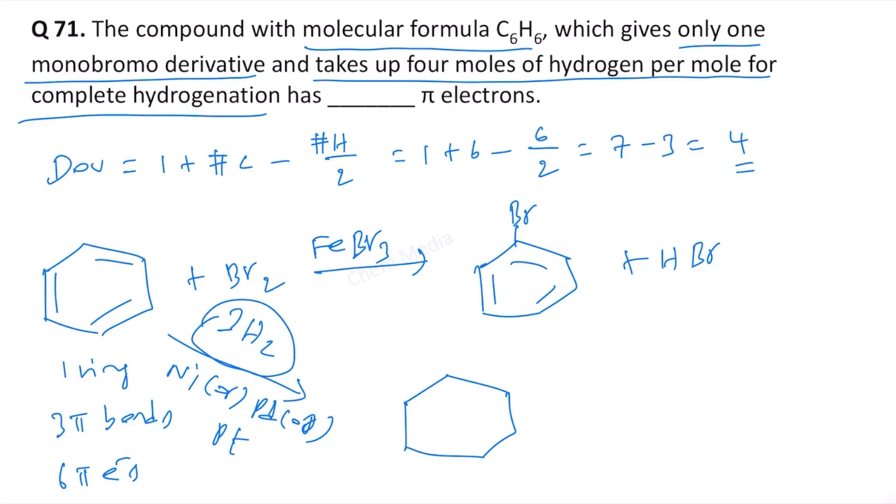But the question says it takes up 4 moles of hydrogen per mole for complete hydrogenation. The stoichiometry for benzene is 1 mole reacting with 3 moles of H2 to give 1 mole of cyclohexane, but the question states complete hydrogenation requires 4 moles.